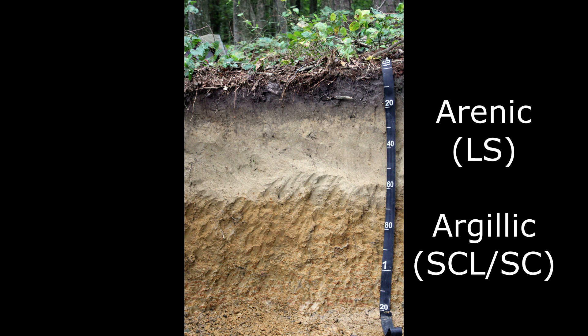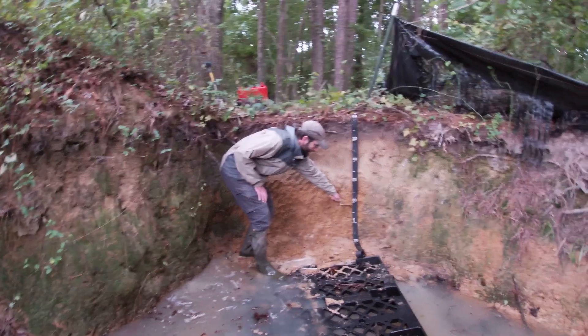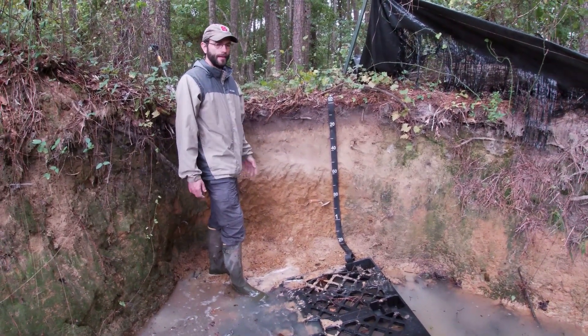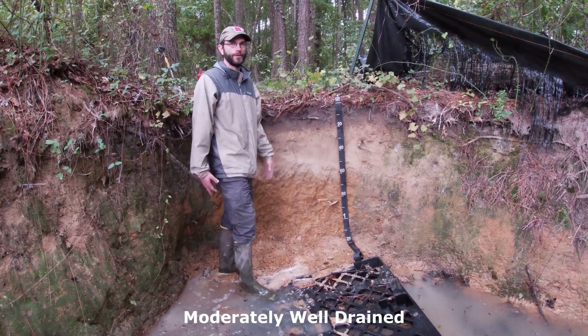Another important interpretation for this soil involves redox depletions — the gray zones. When you have over 2% depletions, that marks your seasonal high water table. So in this soil we have an Ap, an E, a BT1, and a BT2. The second BT is where the common concentrations and depletions come in, which is approximately 80 centimeters. So this soil would not classify as well-drained — it would classify as moderately well-drained. This has impacts on interpretations, especially engineering, if you're going to put a house with a basement.